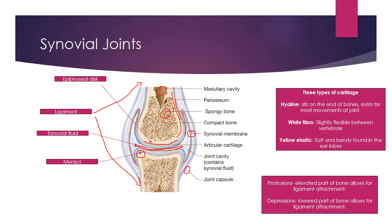Over on the right hand side, we can see three types of cartilage. Hyaline cartilage sits on the end of bones and exists for most movements at the joint. White fibrocartilage is slightly flexible and can be found in the vertebral discs in our back. And yellow elastic cartilage is really soft and bendy cartilage that we find in our earlobes.